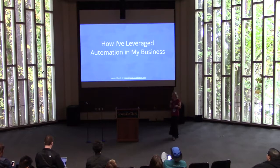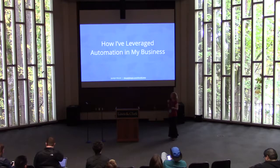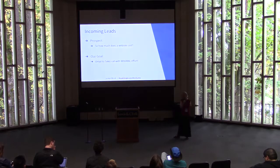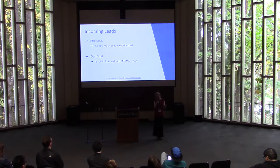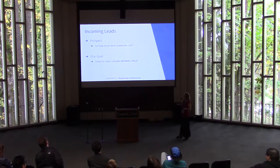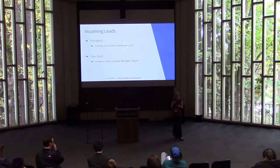I'm going to touch on a few points within a project life cycle — how we use automation for a standard WordPress development project within my business. Typically, projects start like this: you get an email from a prospect asking the exciting question, 'How much does a website cost?' To which we all say, 'It depends.' Our goal with automation is to go from that email to the sales call where we write the estimate and get them onboarded as a client.